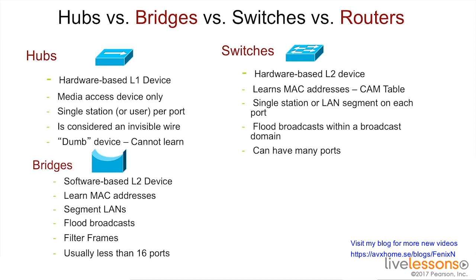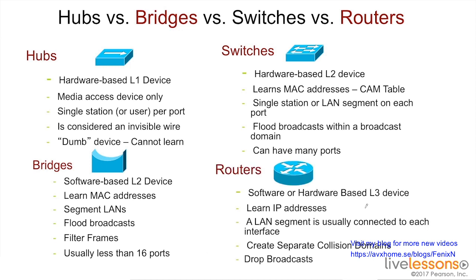Switches do have many more ports and better scalability than a bridge. A router, on the other hand, can create both separate collision domains and broadcast domains. Routers learn IP addresses, help us connect different networks, and in some cases can actually help us route between different protocols and different media types. So switches and routers are very important pieces of the network.